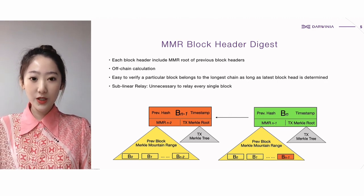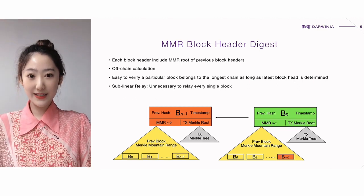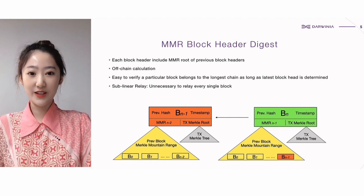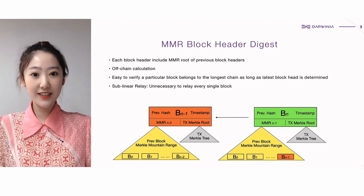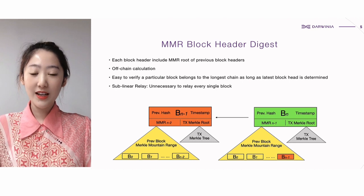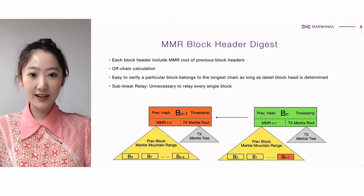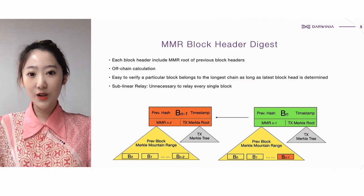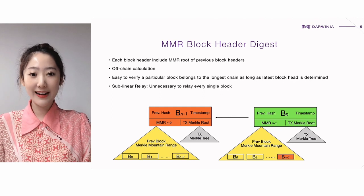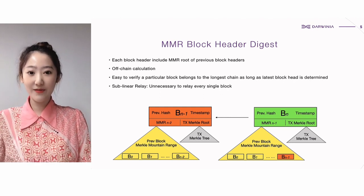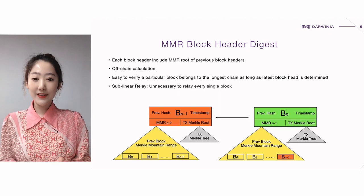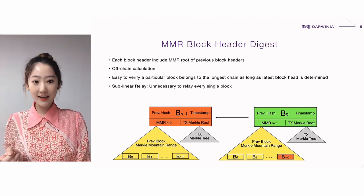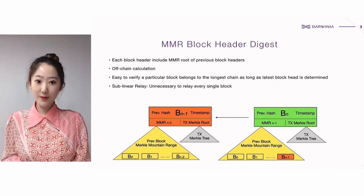An MMR root is the root of previous block header hashes. If you're not familiar with MMR, it's a variant of the traditional Merkle tree. When a new leaf is added, you don't need to recompute all previous leaves. Instead, you can append it to a previously computed MMR root to get a new root with minimum computation. Imagine you have a chain of 1 million blocks — you don't need to go through all the history when a new block is produced. By embedding the previous block header MMR in the block header, we can verify whether a given block header hash belongs to the current chain as we maintain the latest header. For example, we only need to verify two blocks — one genesis block and a block header at height 1000 — and then we're able to verify any block hash within this 1000-block-long chain.